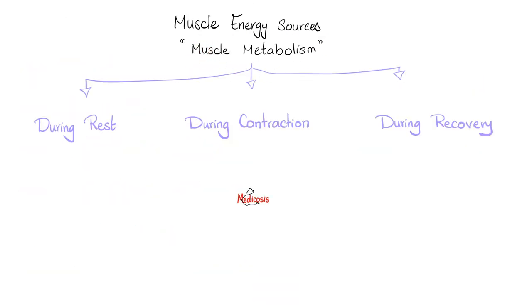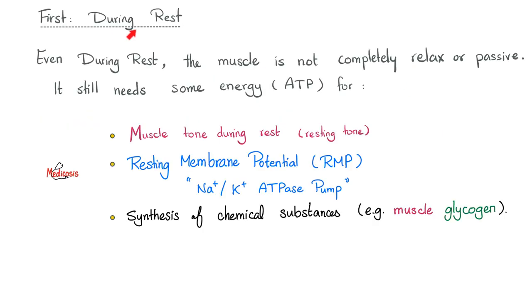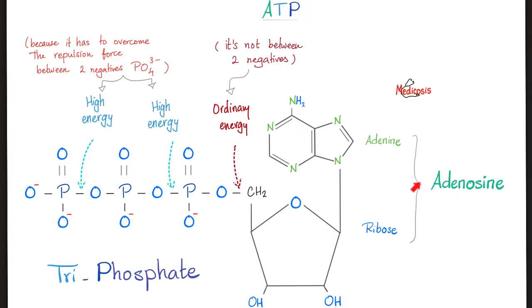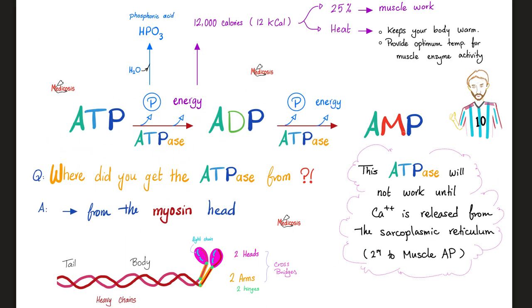Muscle metabolism: your muscle needs energy during rest, contraction, and recovery after exercise. During rest you need ATP for muscle tone, the sodium-potassium pump (needed for resting membrane potential), glycogen synthesis, and creatine phosphate. ATP is adenosine triphosphate — adenine plus ribose make adenosine, with three phosphate groups and three bonds, only two of which are high-energy. ATPase breaks ATP into ADP, releasing energy and phosphate.